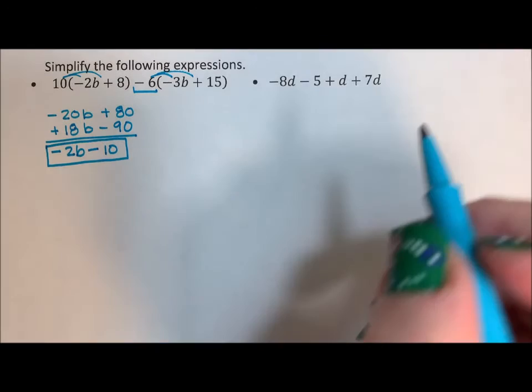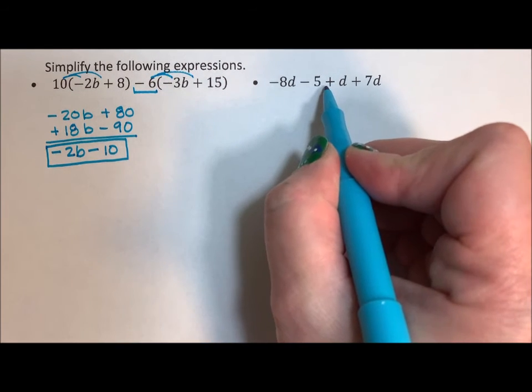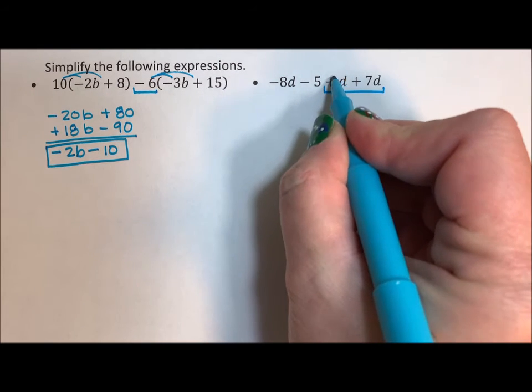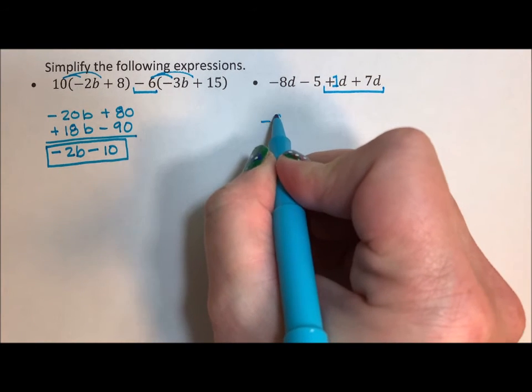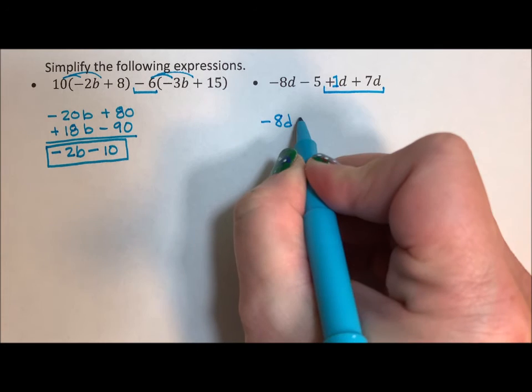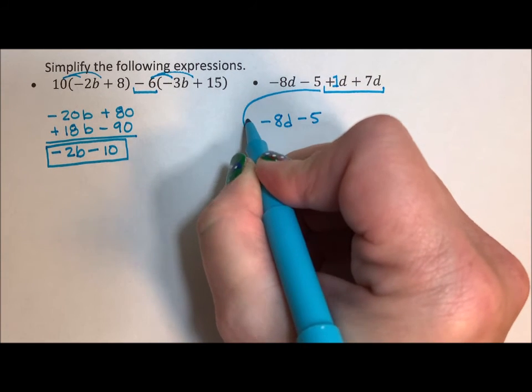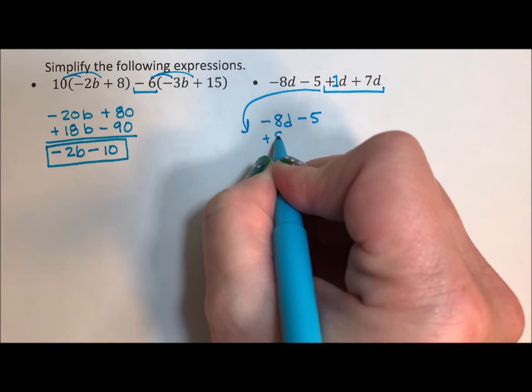Okay, over here, I'm going to start by d plus 7d. There's an implied one here, so that's really 8d. So let's see, negative 8d minus 5. And I'm going to bring this under here to stack it. Let's see, 1 plus 7 is 8, so plus 8d.